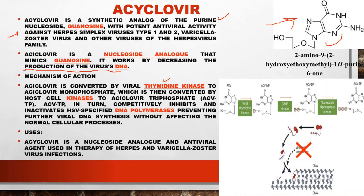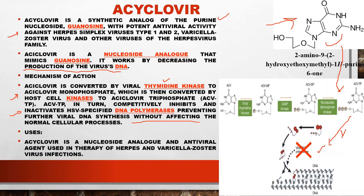In acyclovir's mechanism: first, in the presence of viral thymidine kinase, acyclovir is converted to acyclovir monophosphate, which is then converted by host cellular kinases to acyclovir triphosphate. The acyclovir triphosphate competitively inhibits and inactivates HSV-specified DNA polymerase — this is a very important point. Acyclovir is finally converted to acyclovir triphosphate, which inhibits the DNA polymerase enzyme, stopping viral DNA synthesis.